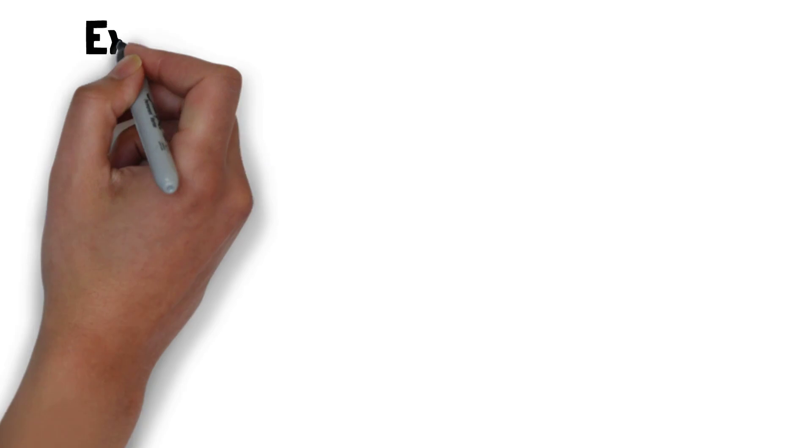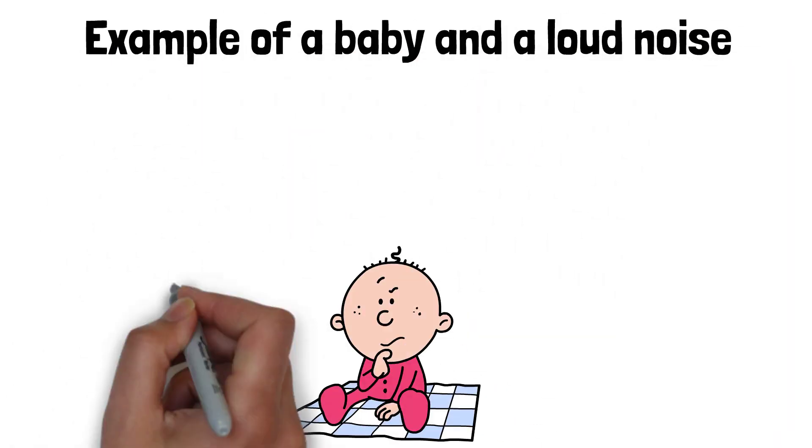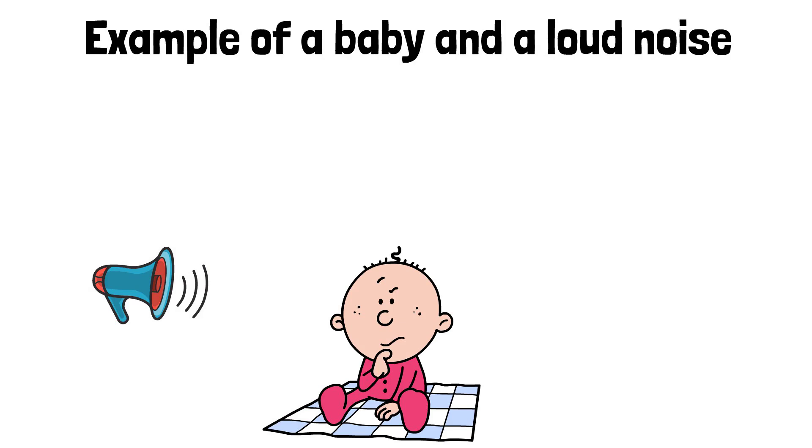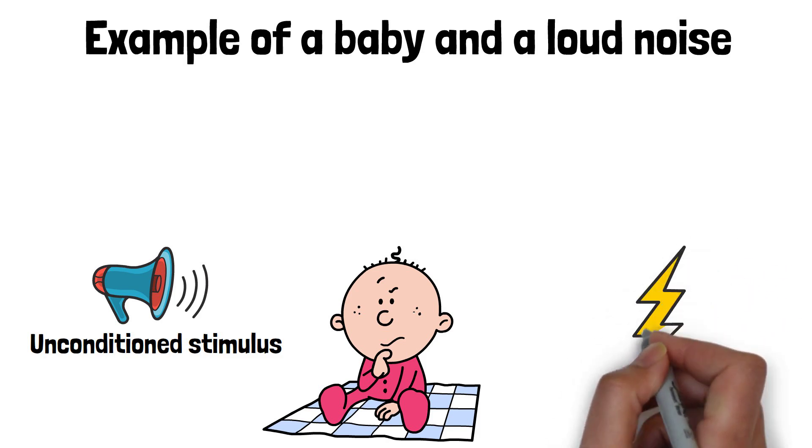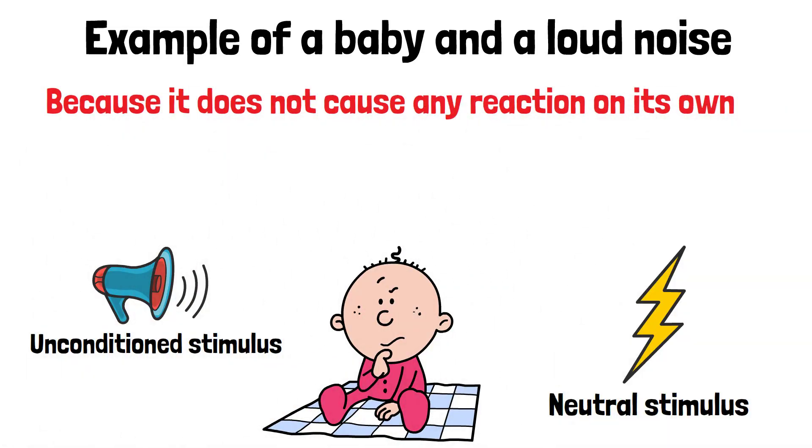First, consider the example of a baby and a loud noise. Suppose a baby hears a loud noise, which is an unconditioned stimulus that naturally causes a reaction, and simultaneously sees a flashing light. Initially, the flashing light is a neutral stimulus because it does not cause any reaction on its own.